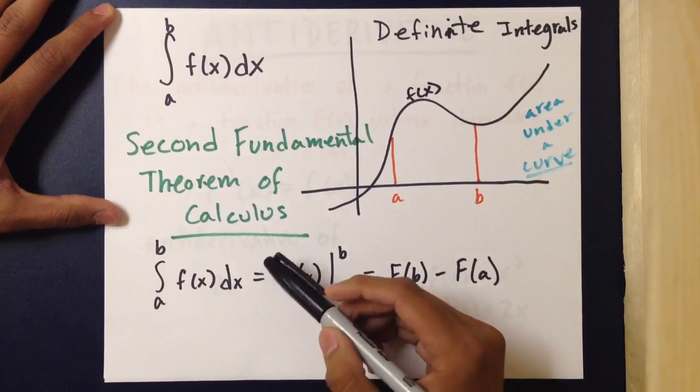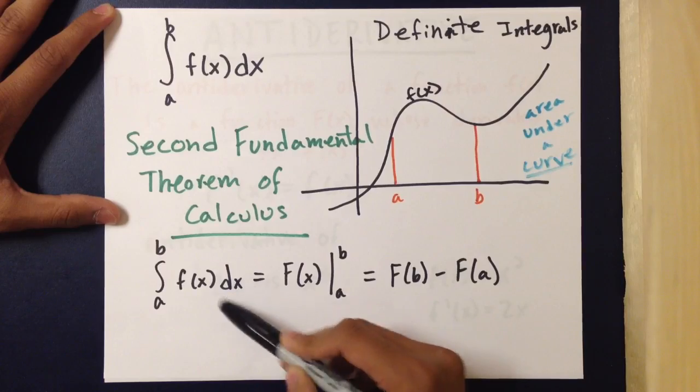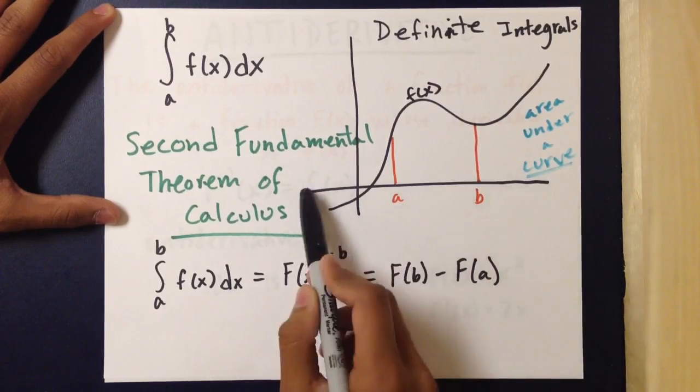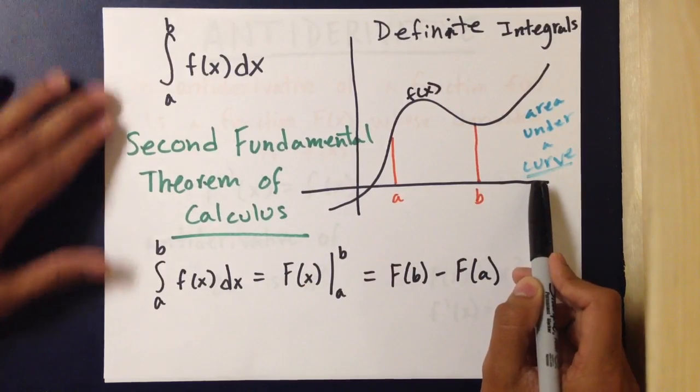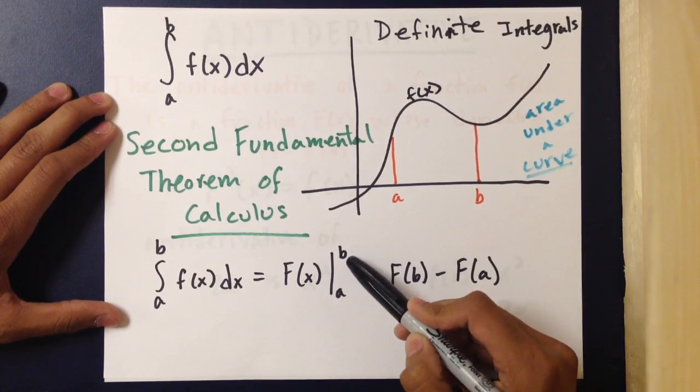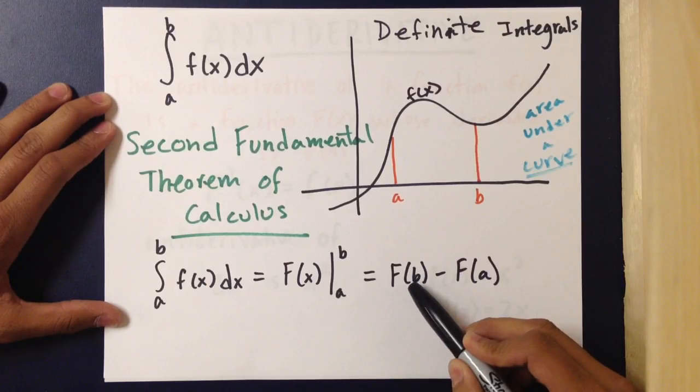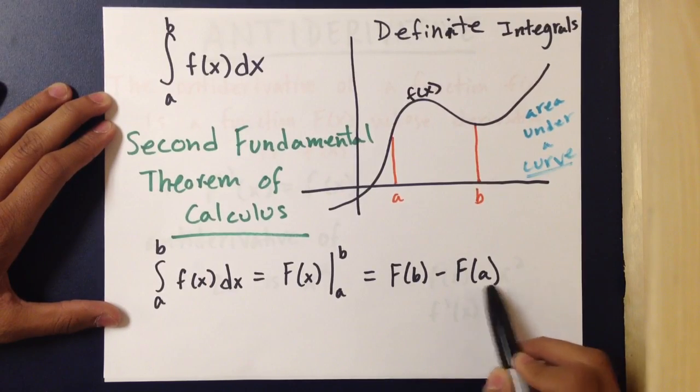This theorem states that the integral from point A to point B of f(x) with respect to x is the antiderivative of x from A to B, which can also be stated as the antiderivative at point B minus the antiderivative at point A.